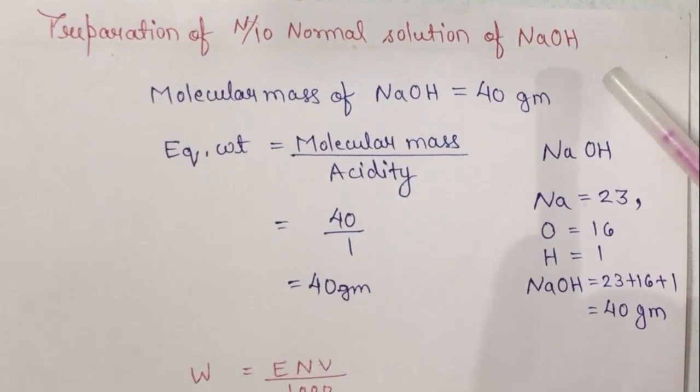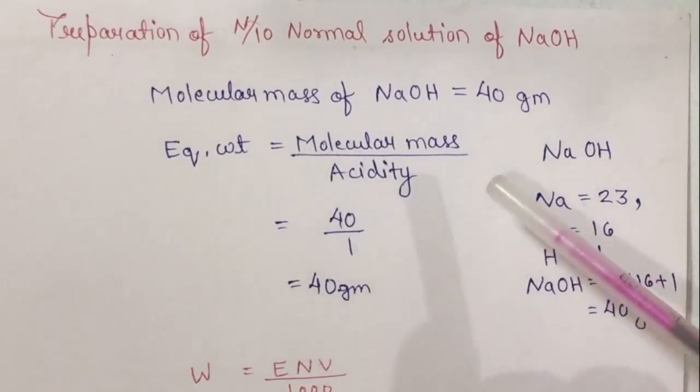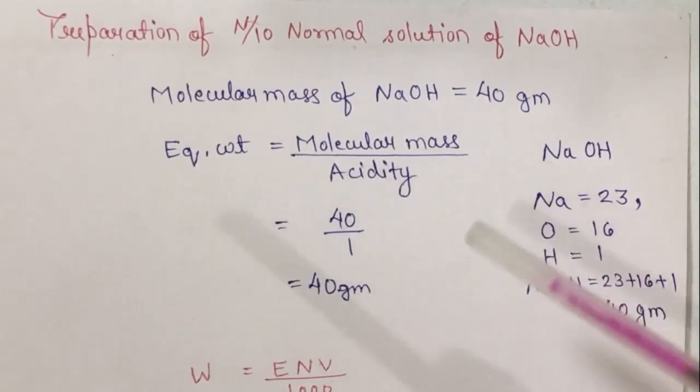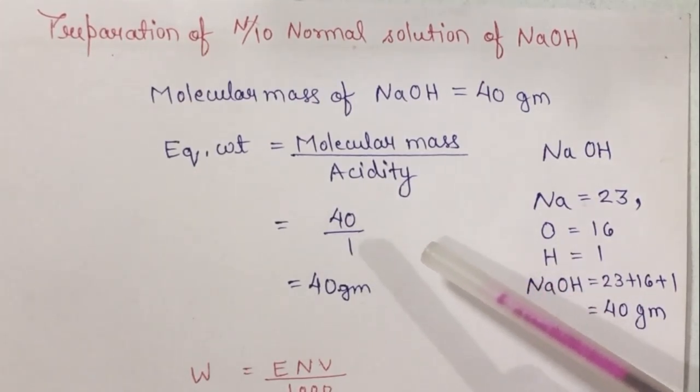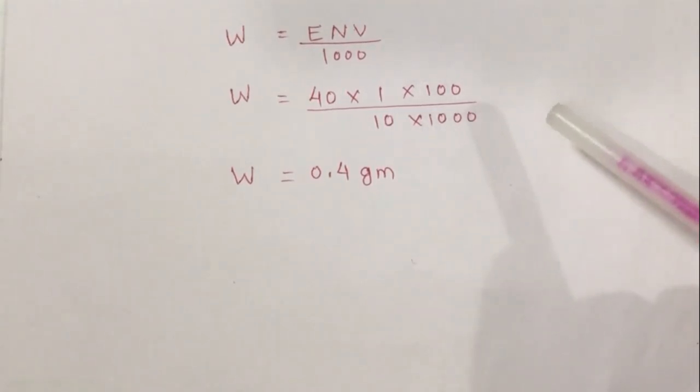Now we have to prepare solution of NaOH of N by 10 normality. We know that molecular mass of NaOH is 40 grams. We calculate by using this: Na equals 23 grams, oxygen equals 16, and hydrogen equals 1. By adding all the molecular masses, we get NaOH equal to 40 grams. We are using the formula equivalent weight equals molecular mass upon acidity. We know that molecular mass for NaOH is 40 grams and acidity for NaOH is 1, so we get 40 grams as equivalent weight. Again, we are using the formula W equals E N V upon 1000 for determining the weight of NaOH. By putting the values, we get W equals 0.4 gram. For preparing the solution of desired normality, 0.4 gram of NaOH should be dissolved in 100 ml of distilled water.